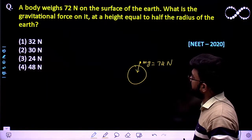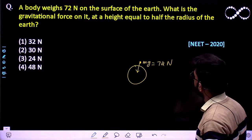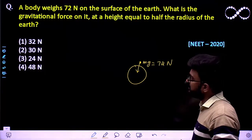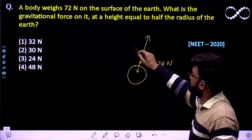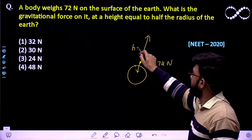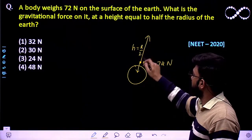So what is the gravitational force on it at the height equal to half the radius of the earth? So that means at certain height, let this height be h which is nothing but r by 2, what would be the weight?